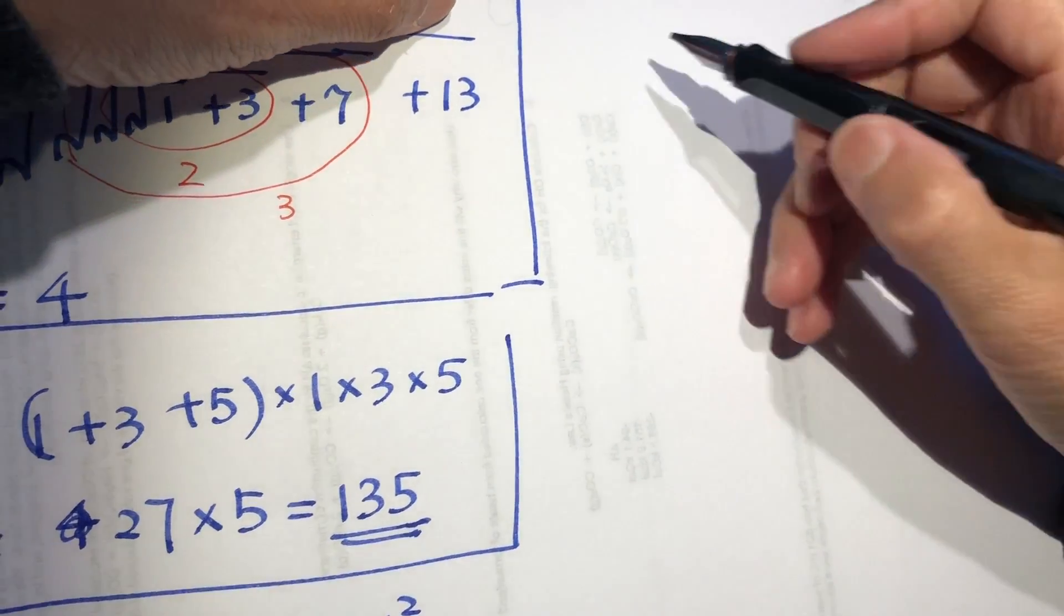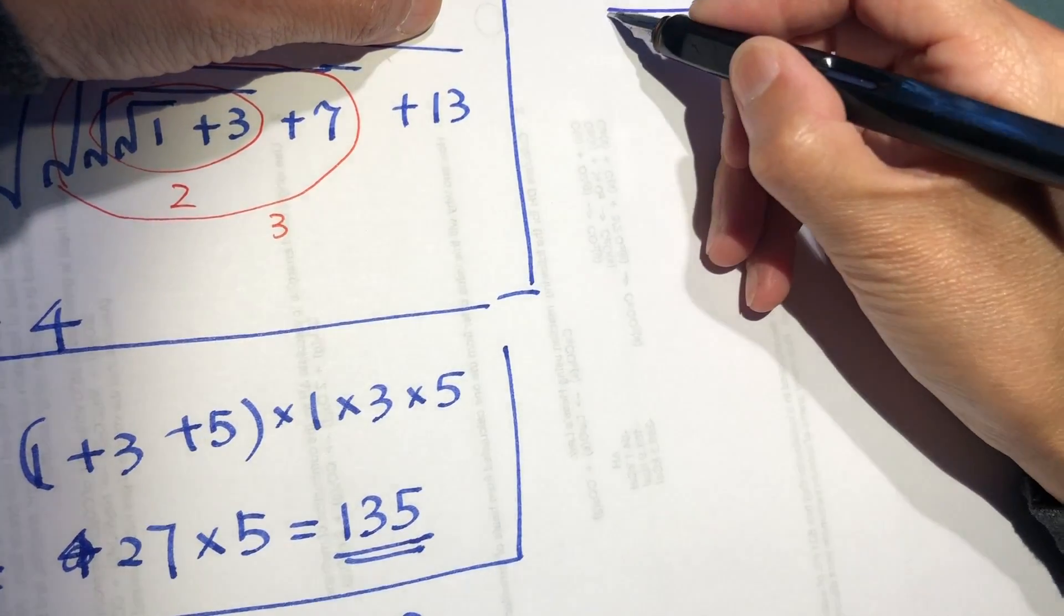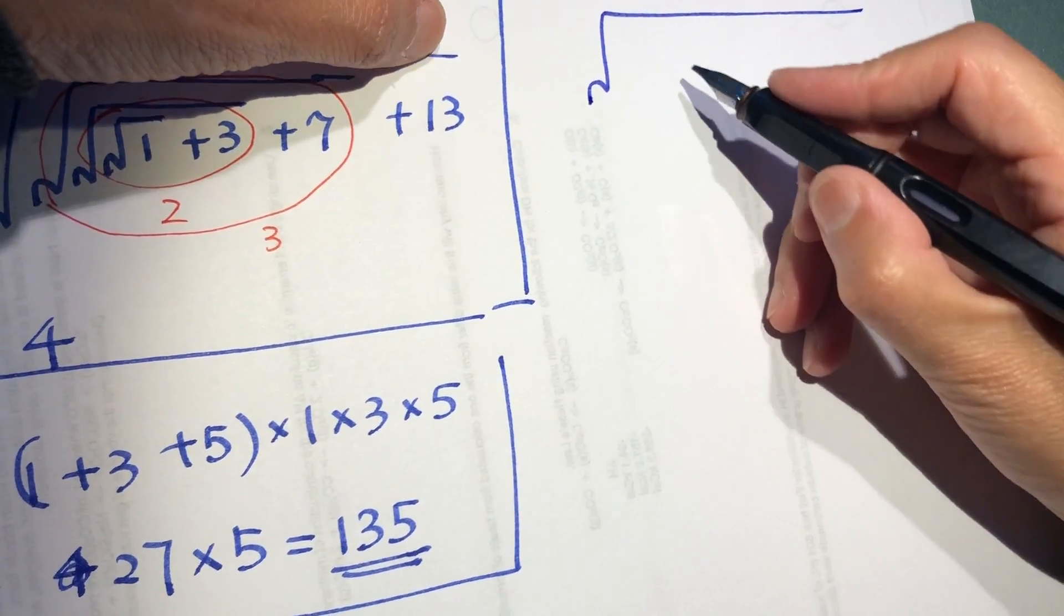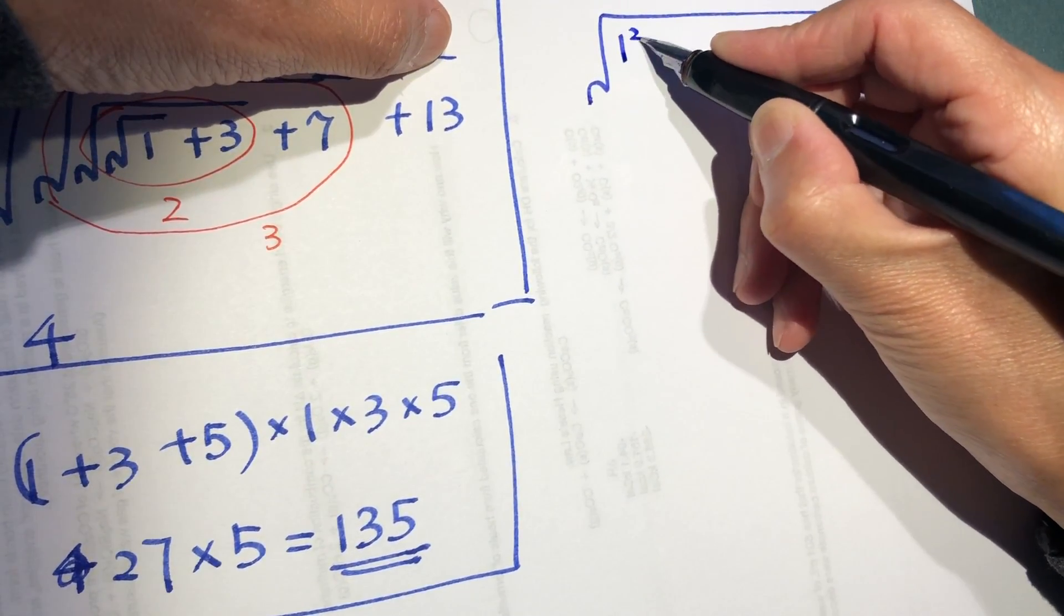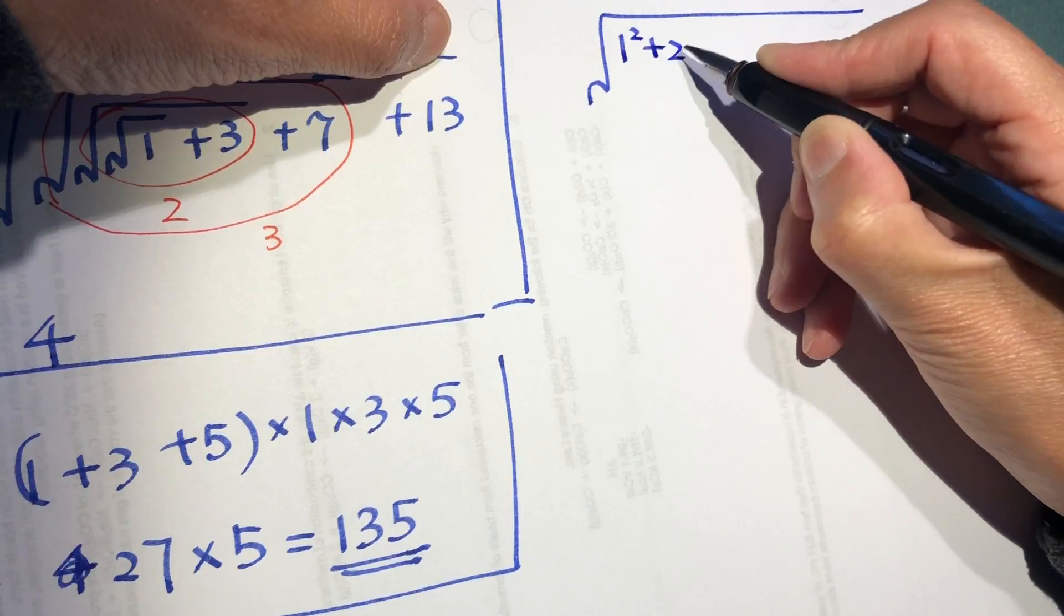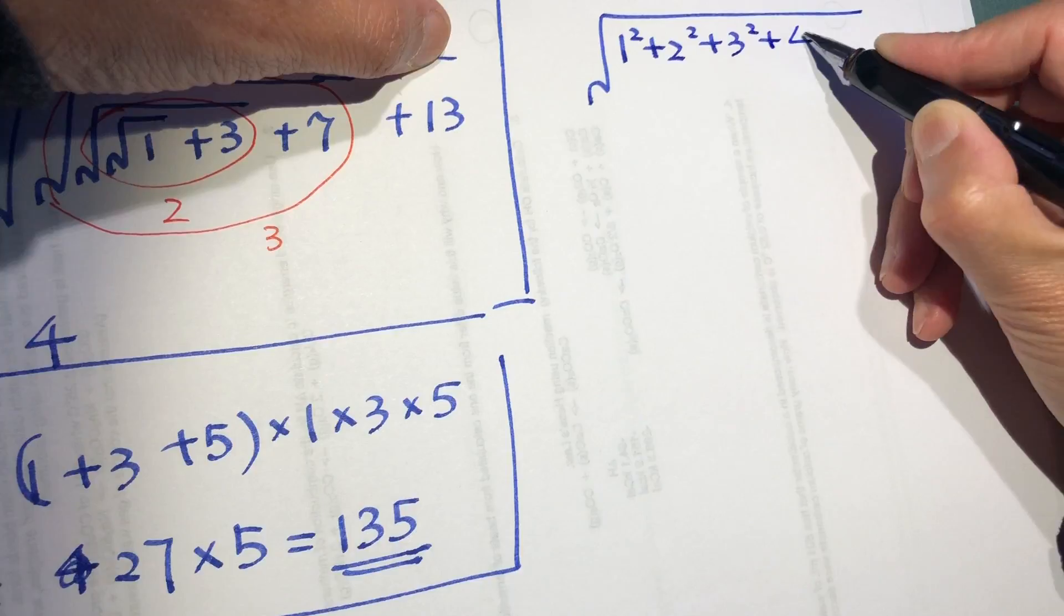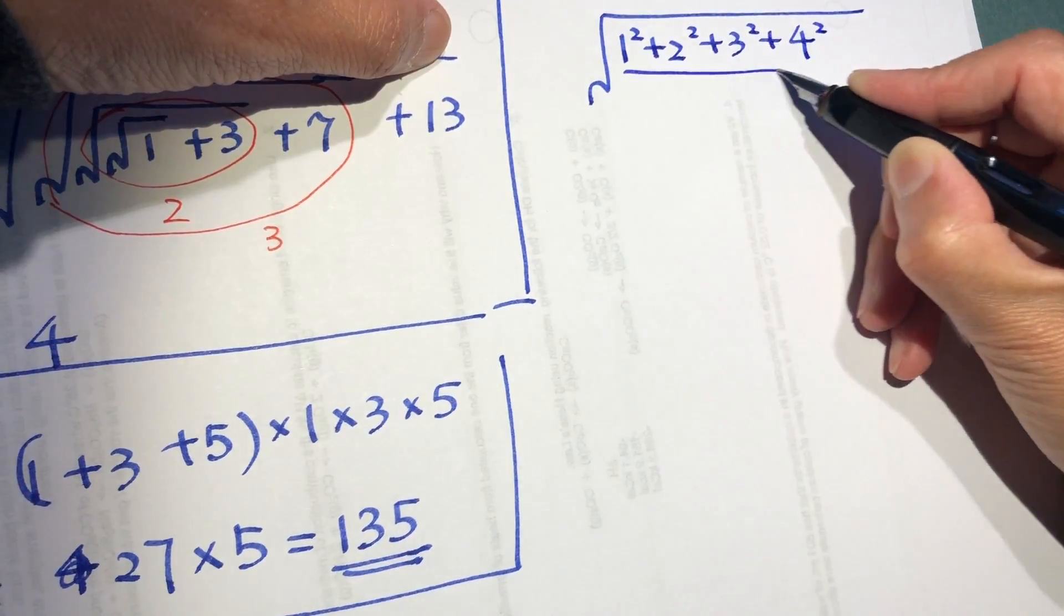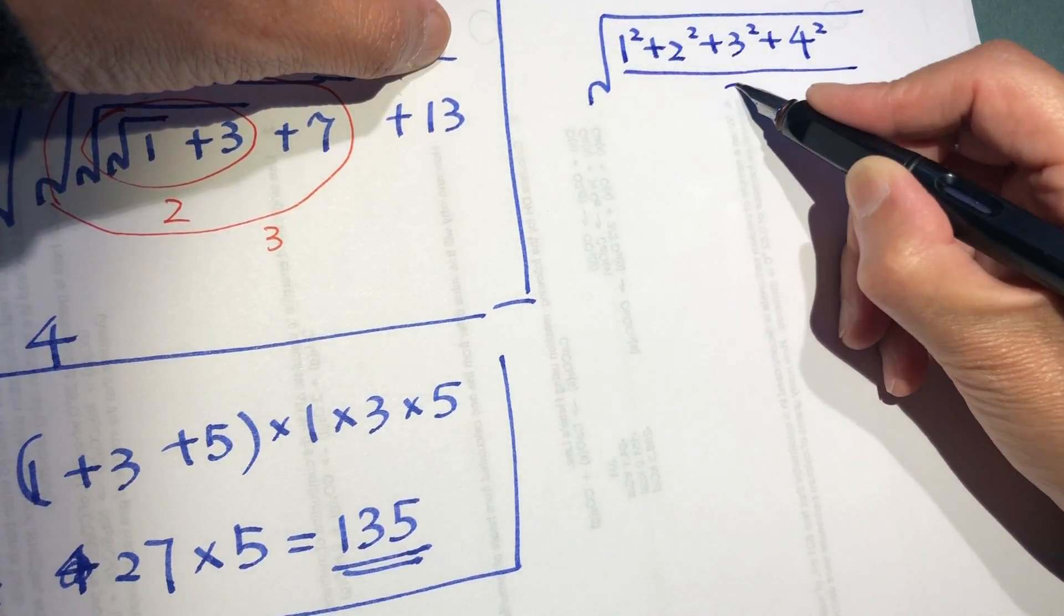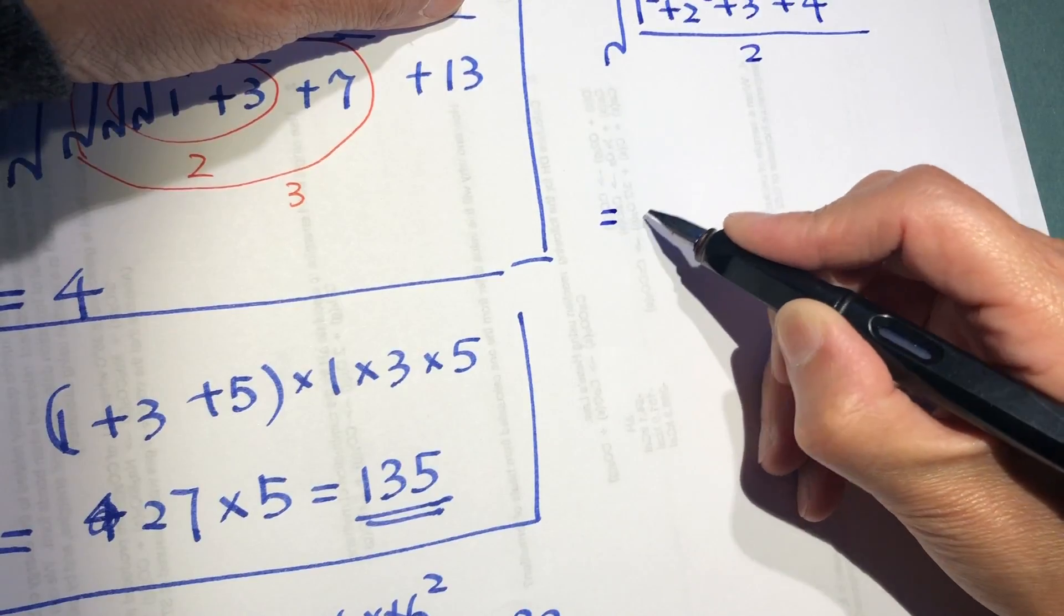Here we have another fun thing: the square root of 1 squared plus 2 squared plus 3 squared plus 4 squared, divided by 2, equal to...